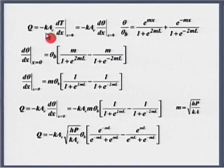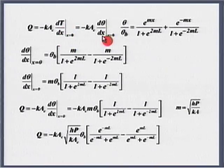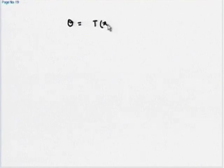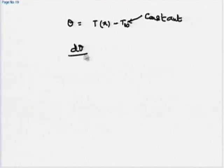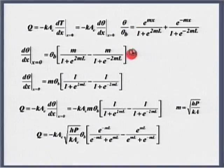What is next? We have the temperature distribution — now we need the heat transfer rate, analogous to getting current after finding voltage. Q = −kA_c · dT/dx at x = 0. Since θ = T(x) − T∞ and T∞ is constant, dθ/dx = dT/dx. So Q = −kA_c · dθ/dx at x = 0.